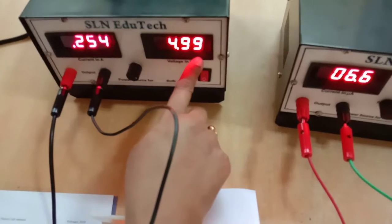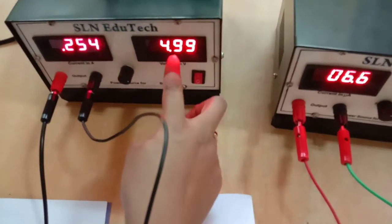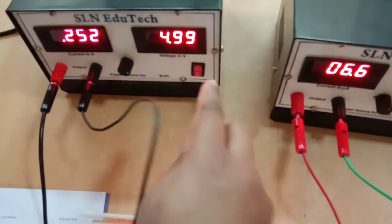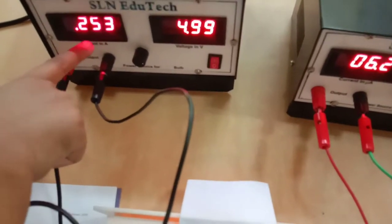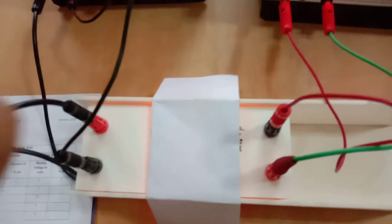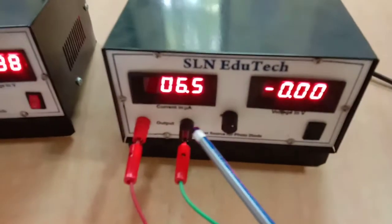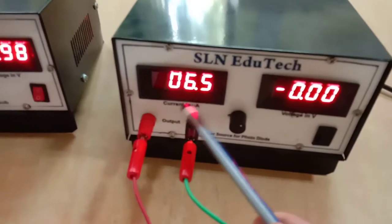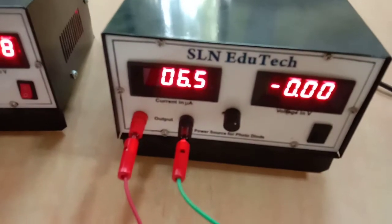Look at this, 4.99 or 5 you can call it. For this voltage, what is the current you are getting across the bulb? It's 0.252, which I am writing here. This is the current across the bulb, 0.252. At the same time, just look at the current across the photodiode, which is 6.5 microamperes.